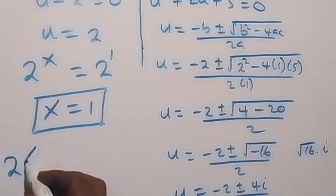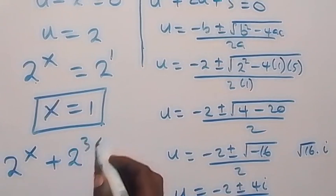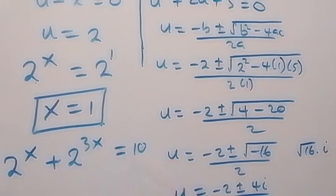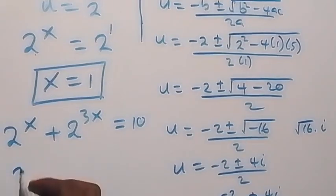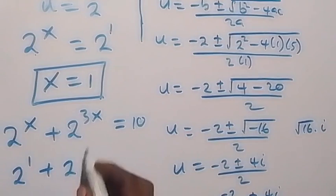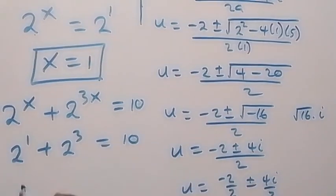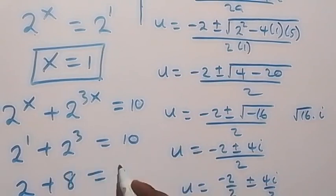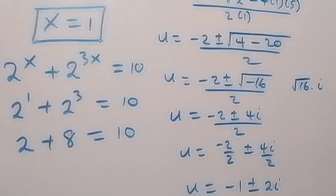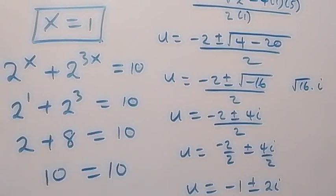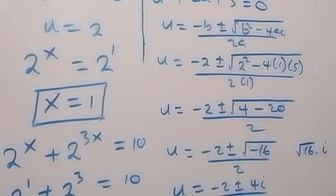Let's check: from what we have, 2 raised to power x plus 2 raised to power 3x equals to 10. Substituting x equals to 1 gives 2 raised to power 1 plus 2 raised to power 3, that's 2 plus 8, which equals to 10. So the left-hand side equals the right-hand side, and x equals to 1 satisfies this given problem.